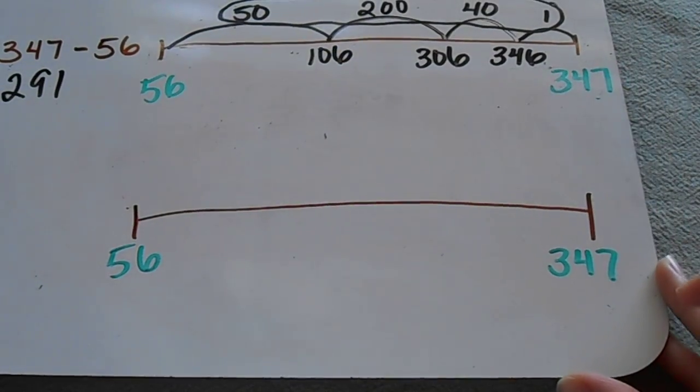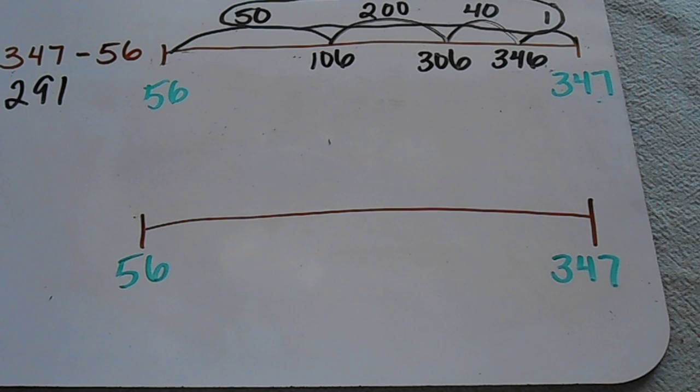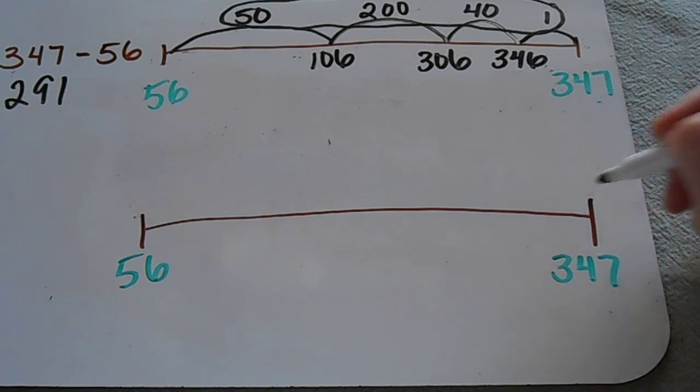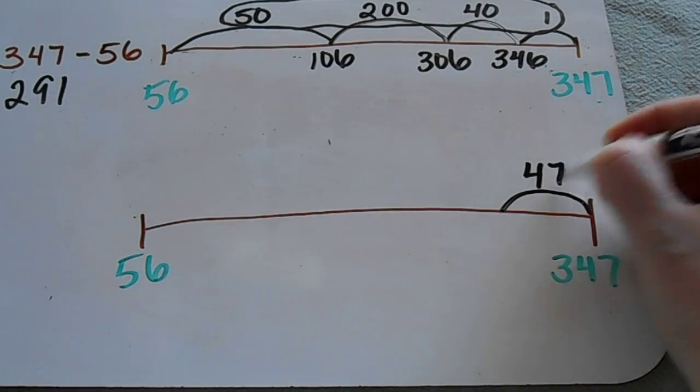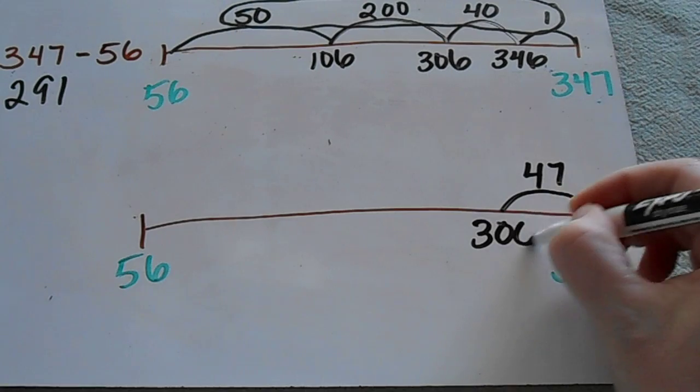I have another number line set up for you just to show you that you can jump in different ways. So again, I'm going to start at 347. Maybe for the first jump, I'll jump down 47 to make this a nice round number.